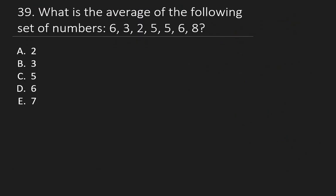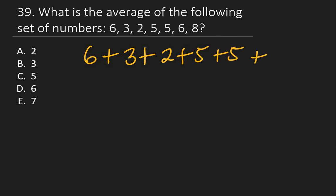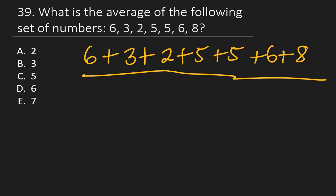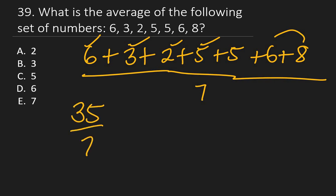Question 39: Find the average of the following set of numbers. To get the average, sum all the numbers and divide by how many there are. There are 7 numbers. Summing them: 8 + 6 + 5 + 5 + 2 + 3 + 6 = 35. 35 ÷ 7 = 5. The right answer is C: 5.